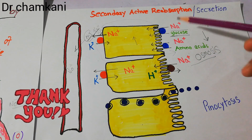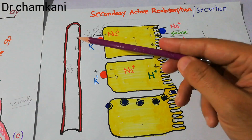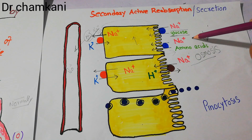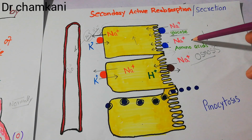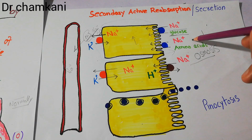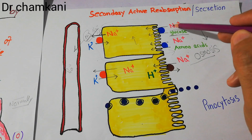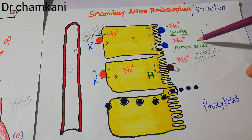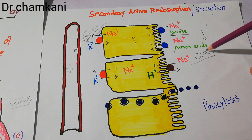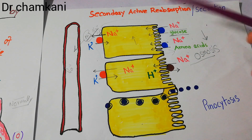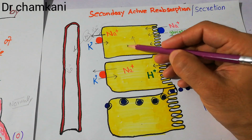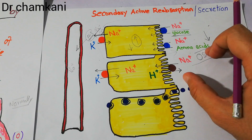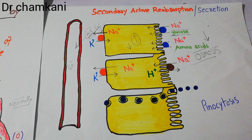Water reabsorption is due to the movement of solute. When the solute concentration increases inside the cell and into the interstitium, the solute concentration in the tubule decreases and the concentration of water there increases. Water moves from a region where its concentration is high and solute concentration is low, to a region where water concentration is low and solute concentration is high — and this process is known as osmosis. This osmosis process is responsible for water reabsorption and it is a passive process.